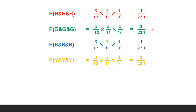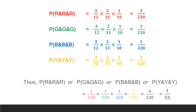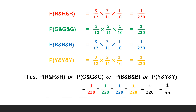The same is the case if 3 green balls, 3 blue balls, or 3 yellow balls are picked. Thus, P(3 reds) + P(3 greens) + P(3 blues) + P(3 yellows) equals the sum of the given probabilities, that is 4/220, which equals 1/55. Therefore, the right answer to the question is option D.